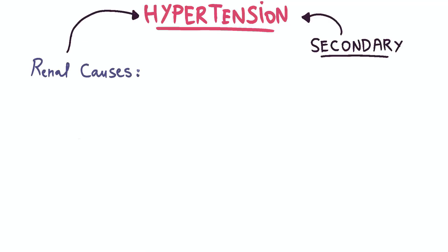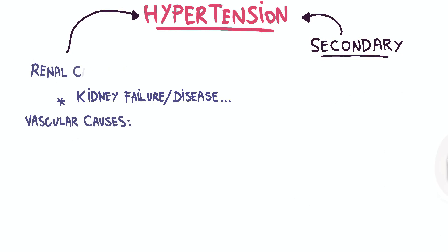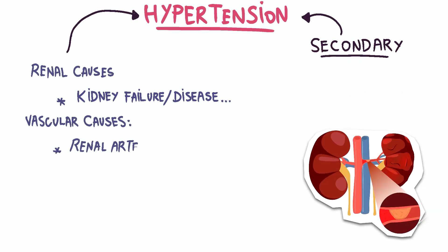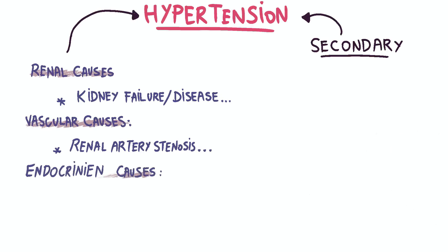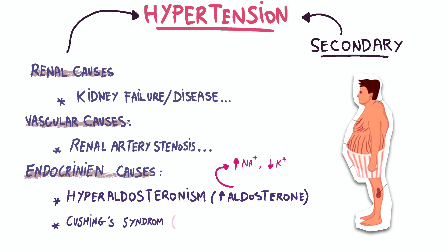Secondary hypertension can result from renal causes such as chronic kidney disease or kidney failure, or from vascular causes affecting blood vessels supplying the kidney, such as renal artery stenosis. Adrenal causes include primary hyperaldosteronism, which involves excessive production of aldosterone, leading to sodium retention and altered potassium levels contributing to elevated blood pressure.